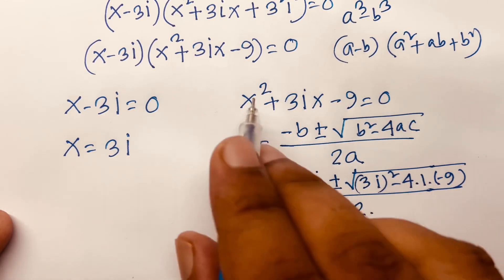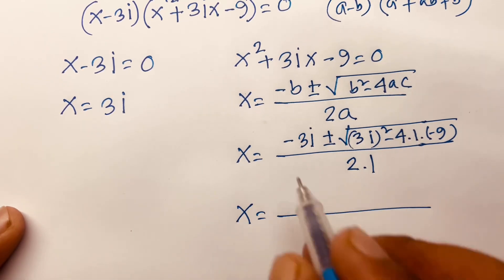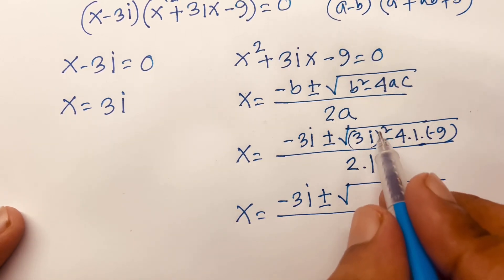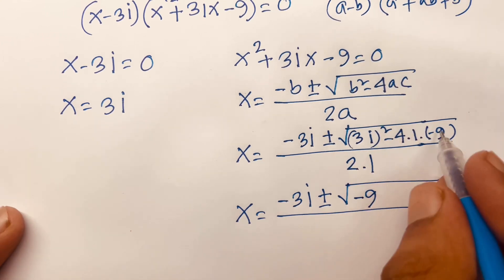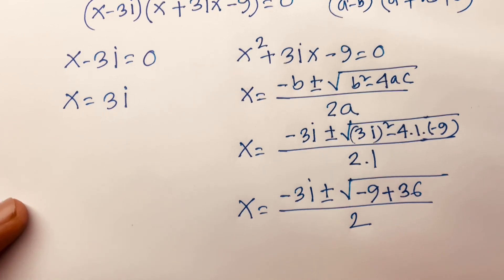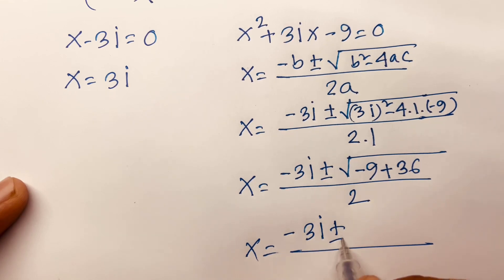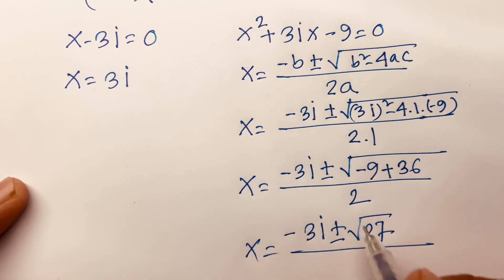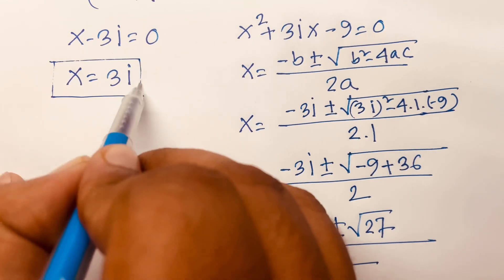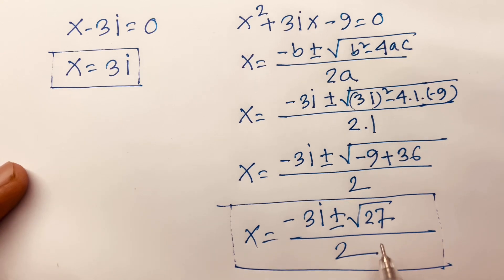Substituting: x equals (minus 3i ± √((3i)² minus 4(1)(minus 9))) / 2. Since (3i)² equals minus 9, this becomes (minus 3i ± √(minus 9 + 36)) / 2, which simplifies to (minus 3i ± √27) / 2. The final answers are x equals 3i and x equals (minus 3i ± √27) / 2.